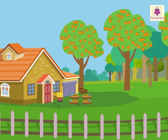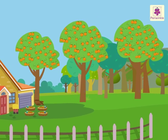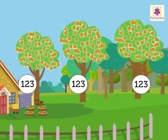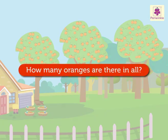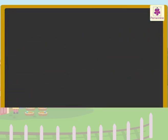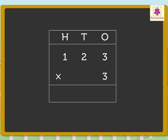Hey, look at the three orange trees! There are 123 oranges on each orange tree. How many oranges are there in all? We will write the numbers in the place value chart, then multiply the digit in the ones place with the multiplier. That is 3 into 3 is equal to 9.